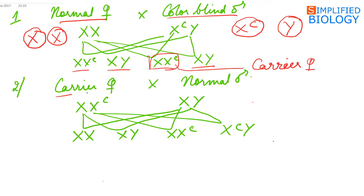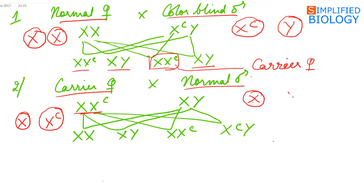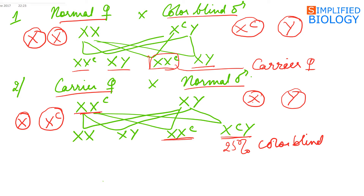In the second cross, carrier females are crossed with a normal male. The carrier female will produce two types of gametes: one having the normal X chromosome and the other having the colorblind gene. The male will produce two types of gametes: one having the normal X chromosome and the other having the Y chromosome. In this case, 25% of the sons are colorblind, 25% of the offspring overall are colorblind, while 25% of the females are carriers.